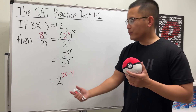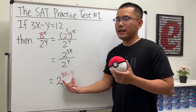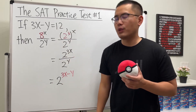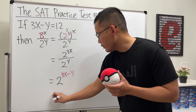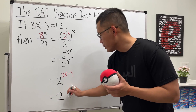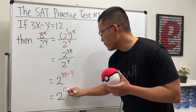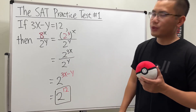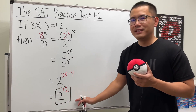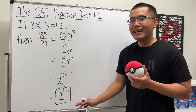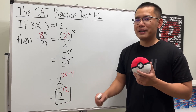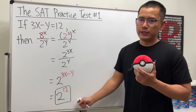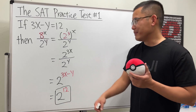But do we know what 3x minus y is? Yes, we do — it's right here, it equals 12. So the answer is just 2 to the 12th power. This is actually one of the answer choices. You can leave the answer like that, or if you'd like, you can multiply it out — 2 times 2 times 2, and so on — or just use a calculator.